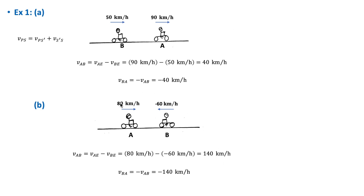For part B, the two motorcyclists are approaching each other along two parallel roads: A is moving at 80 km/h to the right and B is moving at minus 60 km/h to the left. Applying the same equation and substituting the velocity of B relative to earth as minus 60 km/h, the velocity of A relative to B equals 140 km/h.